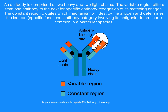An antibody is comprised of two heavy and two light chains. The variable region differs from one antibody to the next for specific antibody recognition of its matching antigen. The constant region dictates which mechanism will destroy the antigen and determines the isotype.